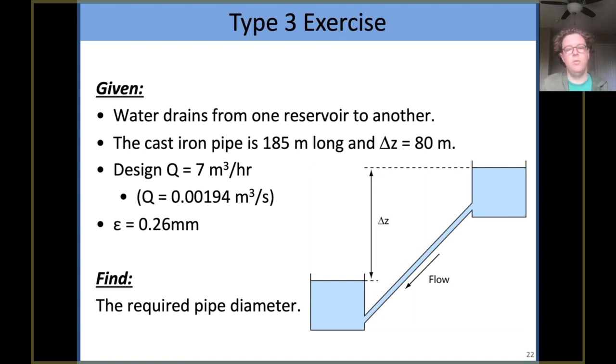So here's a very similar setup to what we used for a type 2 problem. We've got two reservoirs, water draining from the top one to the bottom through a cast iron pipe, a head drop of 80 meters, 185 meters of pipe. We know the flow rate of 7 cubic meters per hour. We have looked up that roughness ratio of 0.26 millimeters based on the given cast iron. Find the pipe diameter. We have a little forehead moment. Yep, this is a type 3 problem. Buckle up, it's time to iterate.